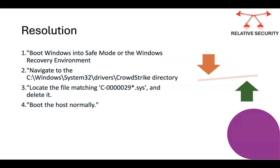There is a workaround being shared across the internet — this hasn't been tested by us, but you can try it. Boot Windows into Safe Mode or the Windows Recovery Environment, then navigate to the directory mentioned on our website (link in the description), locate the file with 'C-00000291' or similar matching 'csagent.sys', and delete it.